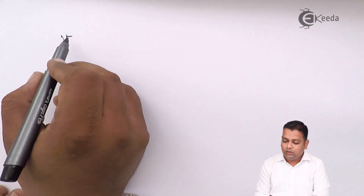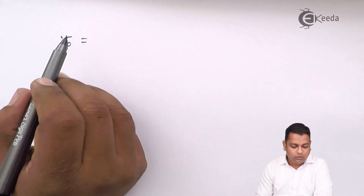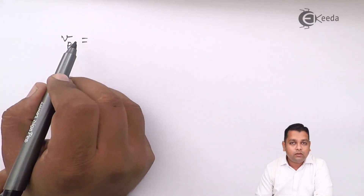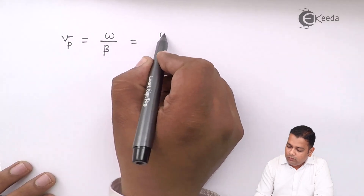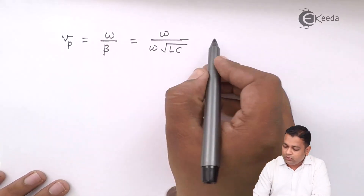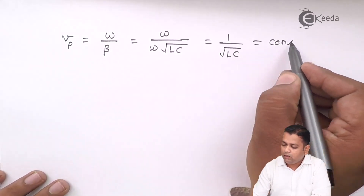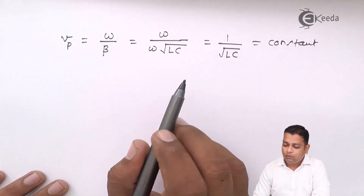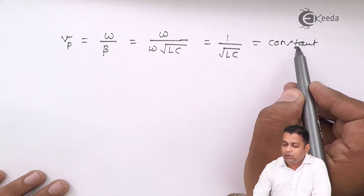After the characteristic impedance, propagation constant, and voltage and current equations, one more important parameter is the velocity of propagation, also called phase velocity V_p. It is given by ω divided by β, which equals ω divided by ω√(LC), simplifying to 1/√(LC) — a constant value. The conclusion is that for the lossless line, the phase velocity has a constant value and is independent of frequency.